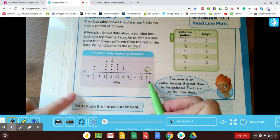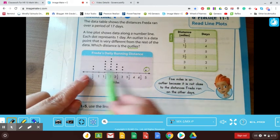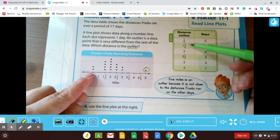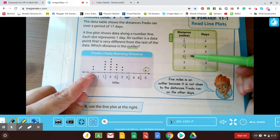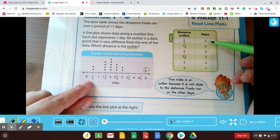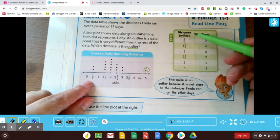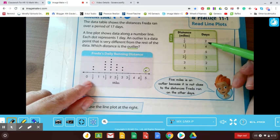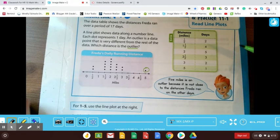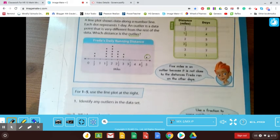Because it's not close to these other distances over here, so she must have been feeling really good on that day because she ran five whole miles. The rest of the days seem to be kind of scattered here, and it looks like these are all of the distances, and it shows how many days she ran those distances. So like a half a mile, she did that twice, so that's why there's two dots, right? All right, let's take a look down at the bottom.